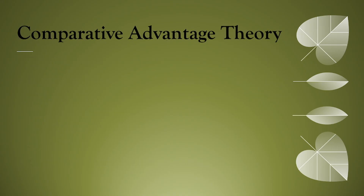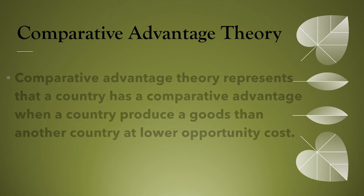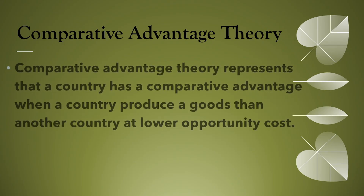Now we'll know about comparative advantage theory. Comparative advantage theory represents that a country has a comparative advantage when it produces a good at a lower opportunity cost than another country. So when a country produces more than others at a lower opportunity cost, this means that this country has comparative advantage.